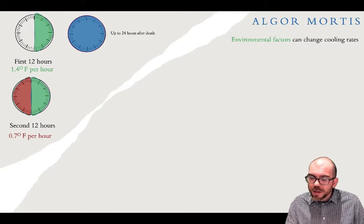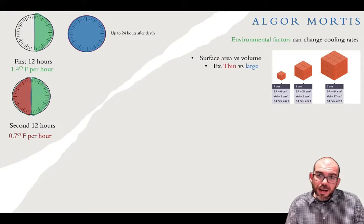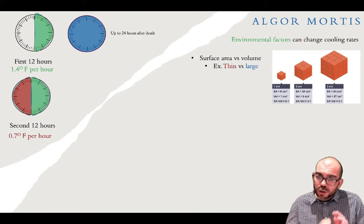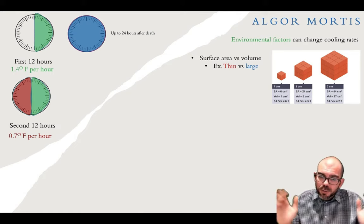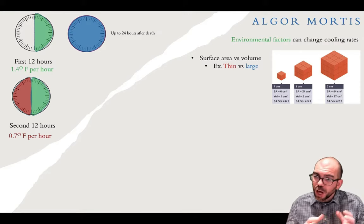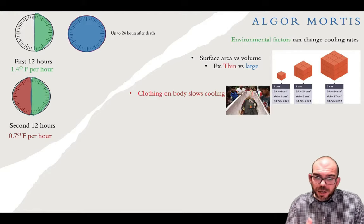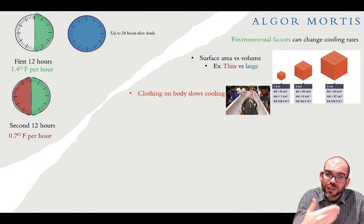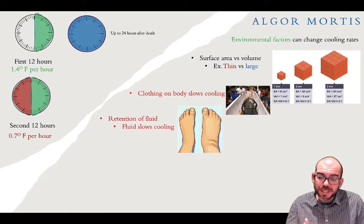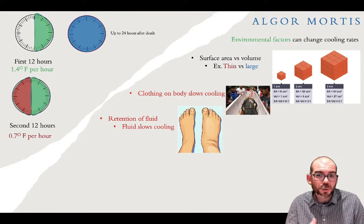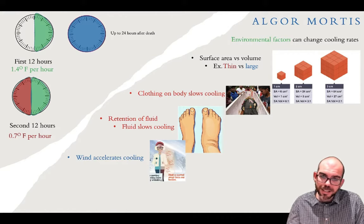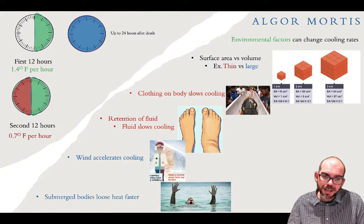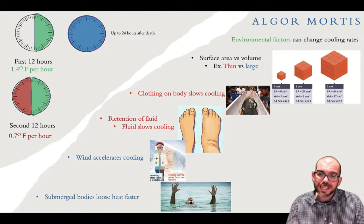The rate of algor mortis can change based on environmental factors. Surface area to volume ratio matters — thin individuals have a large surface area relative to volume, so heat is lost more rapidly, whereas large individuals have more volume and slower heat dissipation. Clothing can slow down cooling by trapping body heat. Fluid retention also slows the cooling process. Wind can accelerate cooling by propelling heat away from the body, and submerged bodies lose heat faster because heat dissipates into the water.